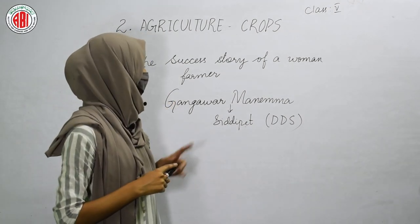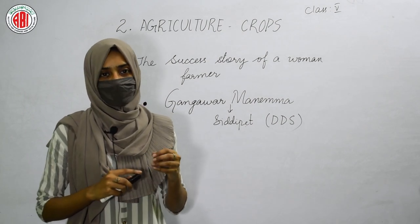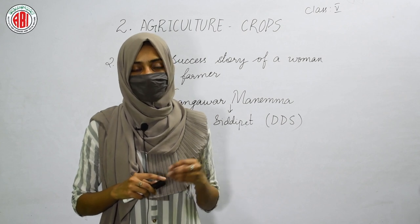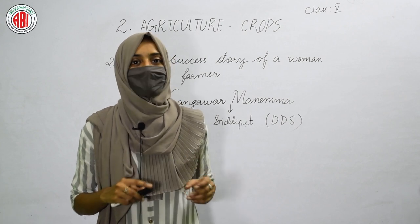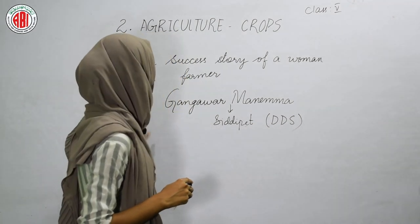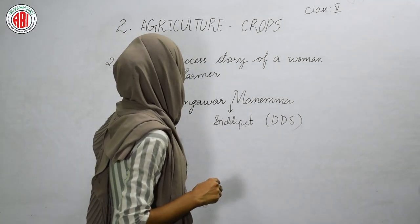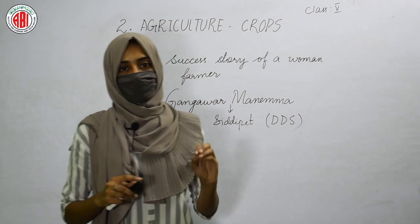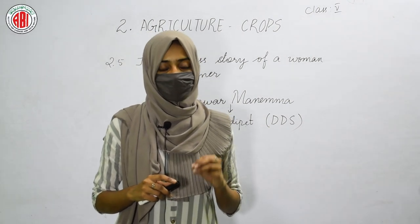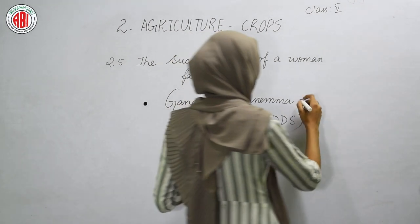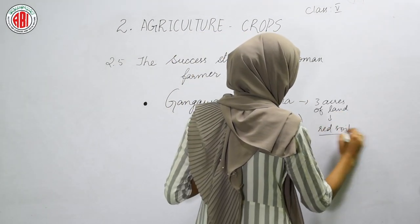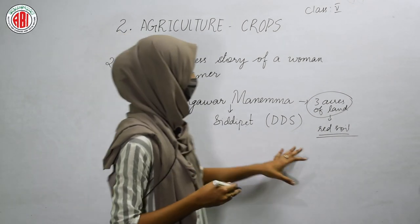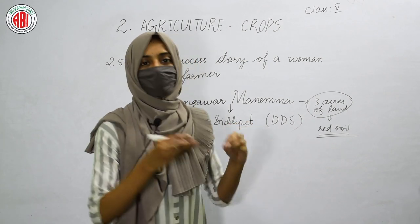Our next topic is the success story of a woman farmer. Do you know who Gangavar Manimma is? She is a famous agriculturist. Not only men — women can also do agricultural practices and become agriculturists. She belongs to the village Gangavar in Siddhipet. She had three acres of red soil land.